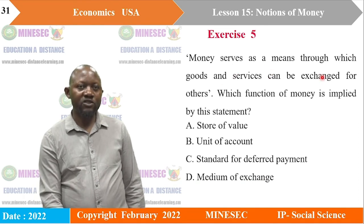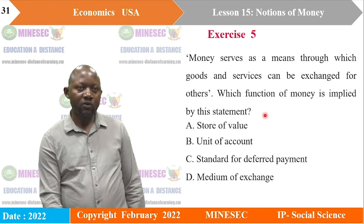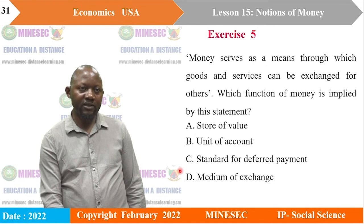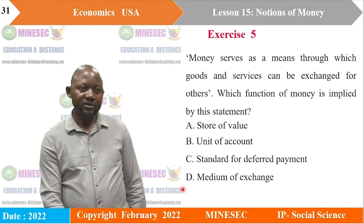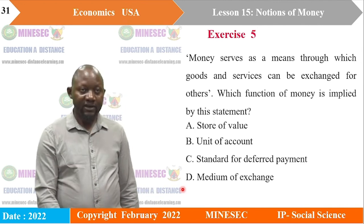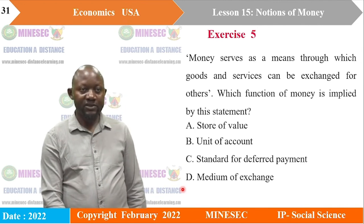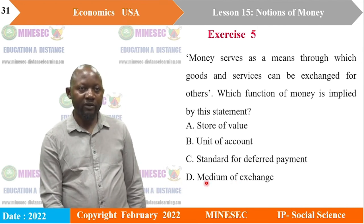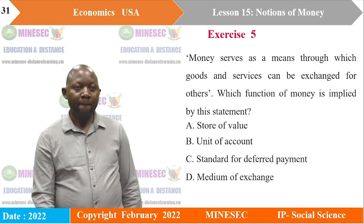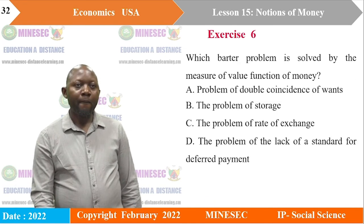Money serves as a means through which goods and services can be exchanged for others. Which function of money is implied by the statement? A) Store of value, B) Units of account, C) Standard for deferred payments, or D) Medium of exchange. Looking at the statement closely, it describes the exchange function, so the answer is D: medium of exchange.